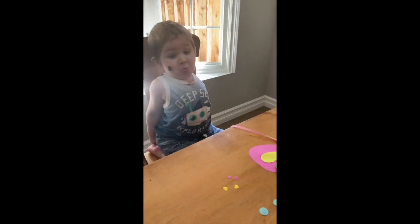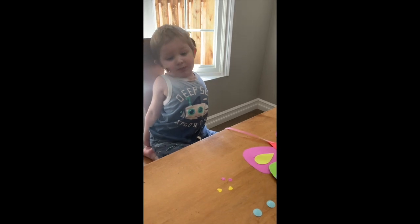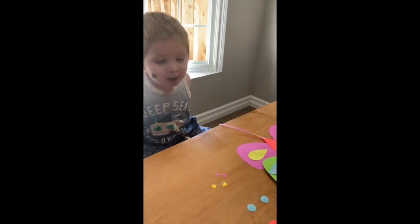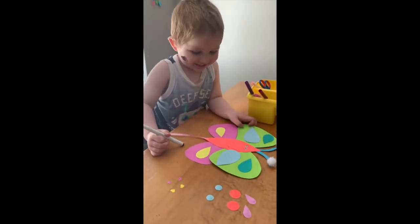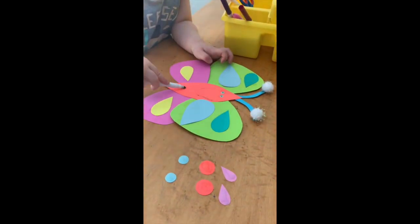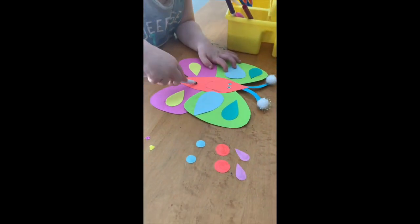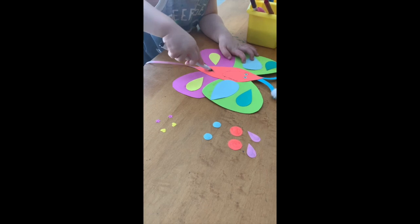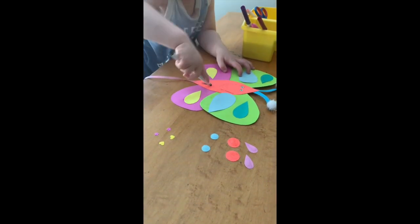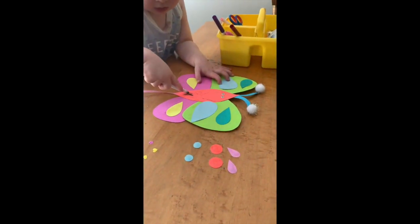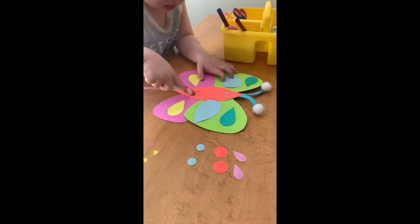So Miles does not want the rest of the decorations on his butterfly. He doesn't want the rest of the ribbon on, so he opted to color some of his butterfly.